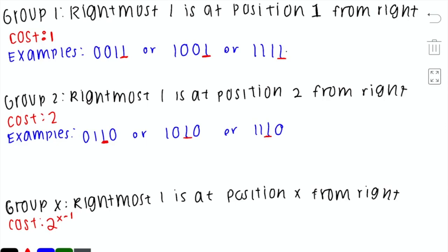We can form groups based on where the rightmost 1 bit is. Group 1 contains all numbers where the rightmost 1 is at position 1 from the right, representing 2 to the power of 0 (i.e., 1). All cities in this group can be connected to city 1 at a cost of 1.